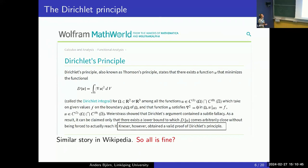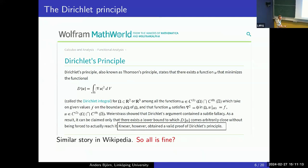If you look up the Dirichlet principle today on Wolfram MathWorld or Wikipedia, you'll find that Hilbert or Kneser obtained a valid proof of the Dirichlet principle. Reading this, one thinks everything is fine. But if G is smooth — for instance, locally a graph of a C¹ function — the proof works. What about the general case?